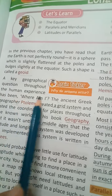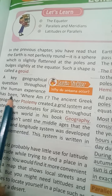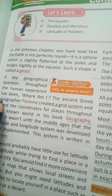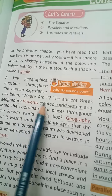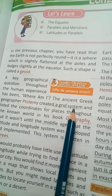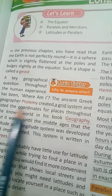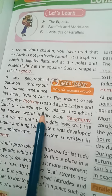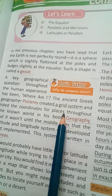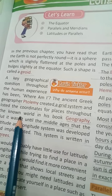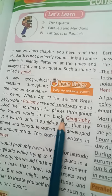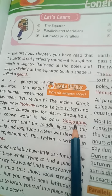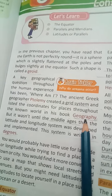A geographical question throughout human experience has been: where am I? The ancient Greek geographer Ptolemy created a grid system and listed the coordinates for places throughout the known world in his book.